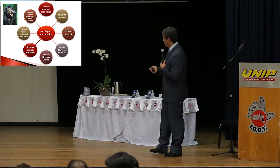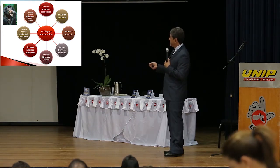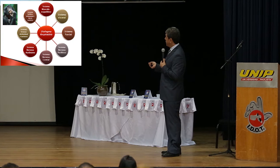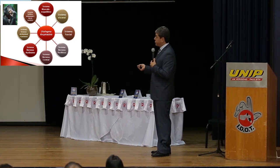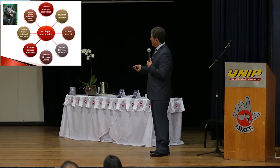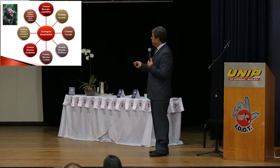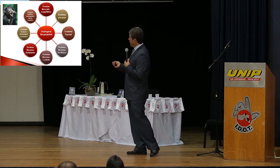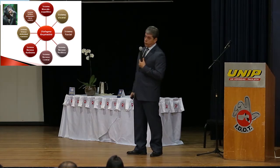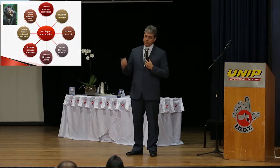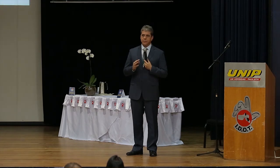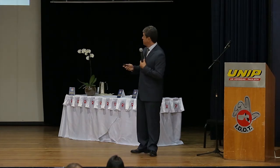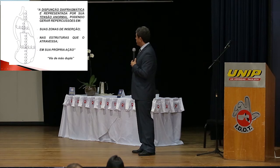Nós conhecemos as relações do diafragma respiratório com o sistema músculo-esquelético, com o sistema visceral, com o sistema fascial, com o sistema nervoso periférico, com o sistema nervoso central, com o sistema nervoso autônomo, com o sistema venoso abdominal e torácico, e com o sistema linfático abdominal e ducto torácico. Não é só o frênico enervando os movimentos da caixa torácica — essa é a relação. Vamos falar um pouquinho sobre elas.